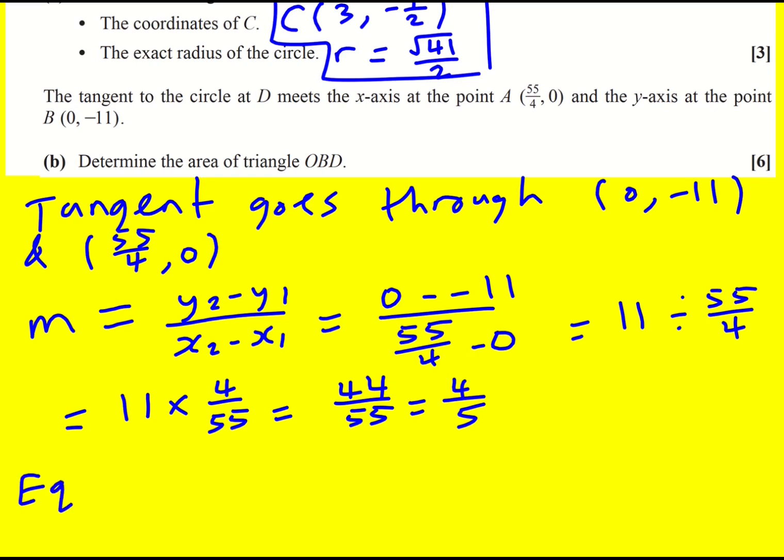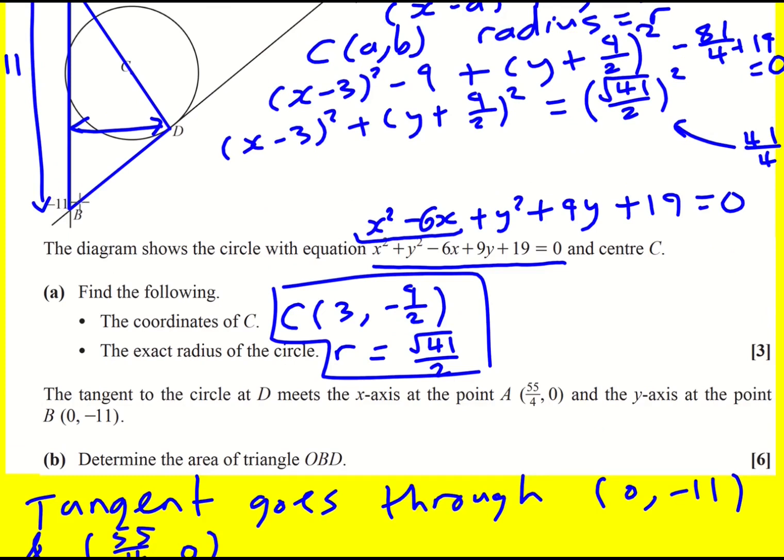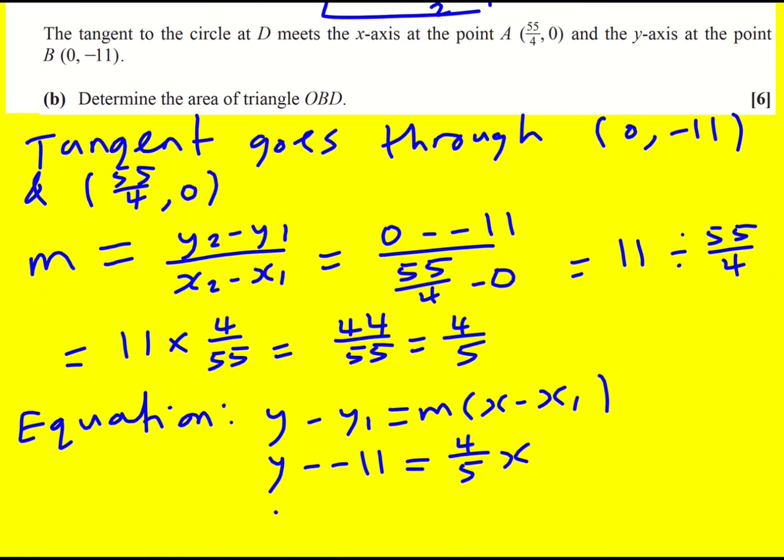And therefore the equation—it's going to be y minus y1 equals mx minus x1. So I'm going to use this point here as a little bit nicer. So y minus minus 11 is going to equal 4 over 5x. I actually just realized I've massively over-complicated this because we already have the intercept. So it would have been better to use y equals mx plus c in this instance. Y equals 4 fifths x minus 11.